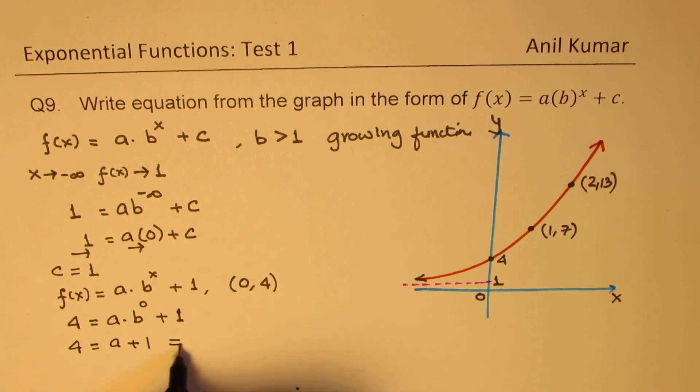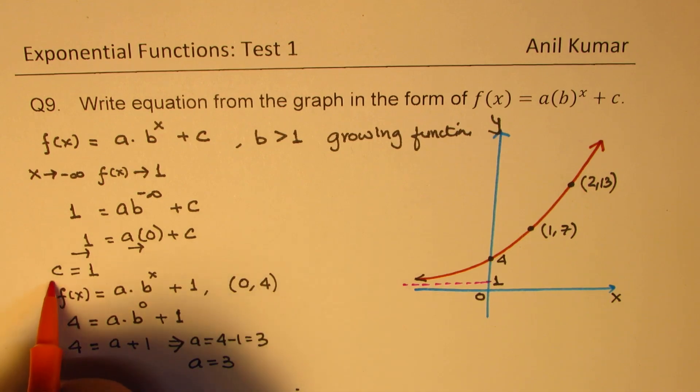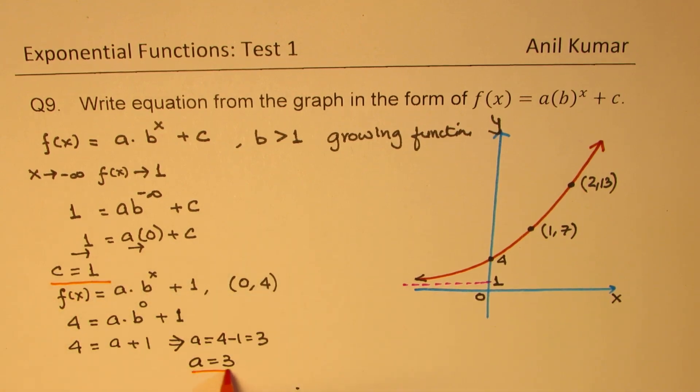And that clearly gives us the value of a as 4 minus 1, which is 3. So we got a as equal to 3. So let me highlight the values which we have already got. One is c equals to 1 and a equals to 3.